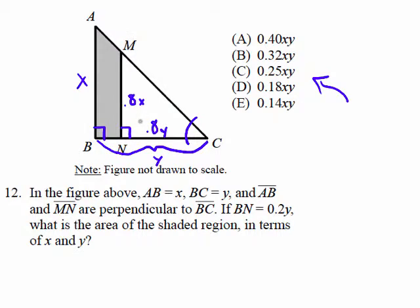So that's where people get confused. They don't know that you can determine MN is 0.8X because they don't recognize that they're dealing with similar triangles, but you're dealing with similar triangles. So 0.8X and 0.8Y are the legs of right triangle MNC. What is the area of the shaded region in terms of X and Y?